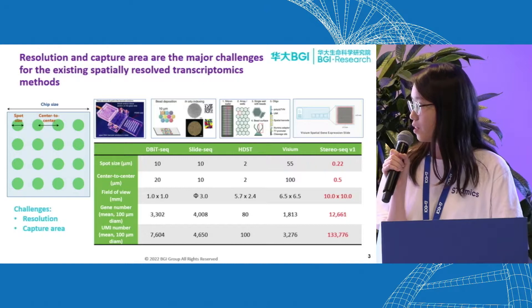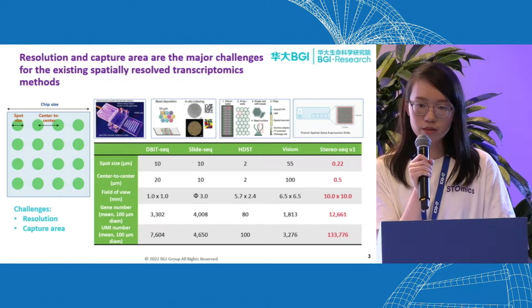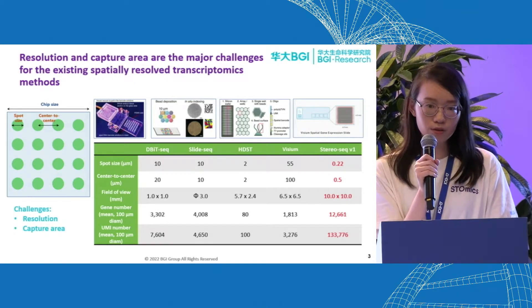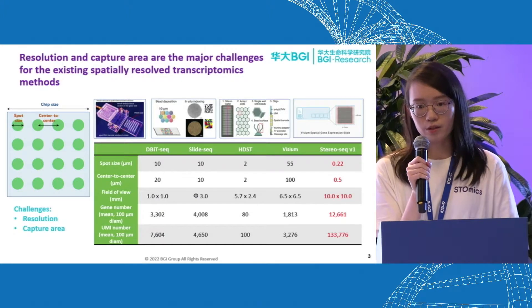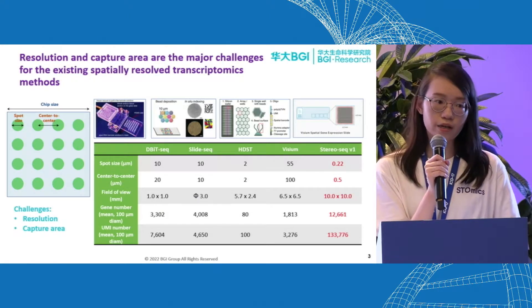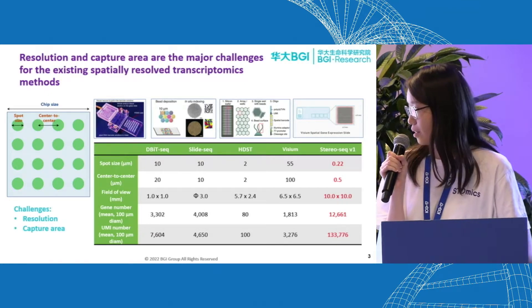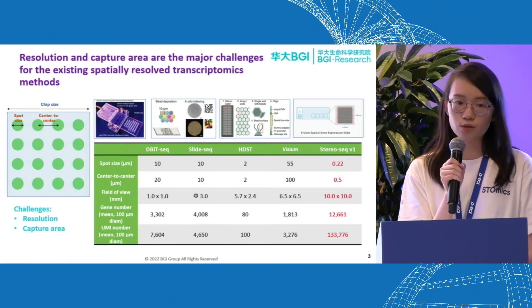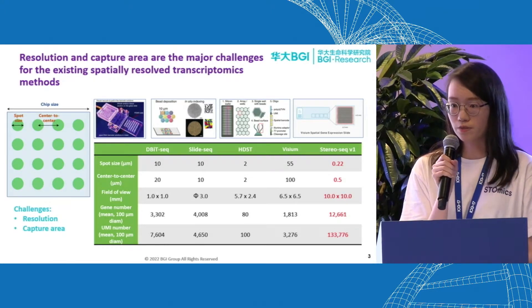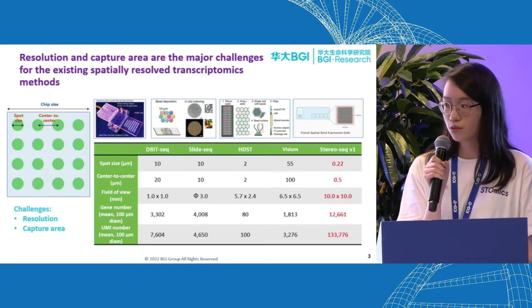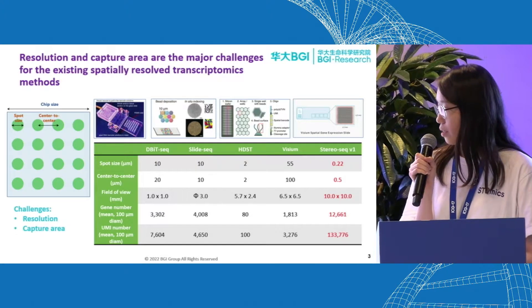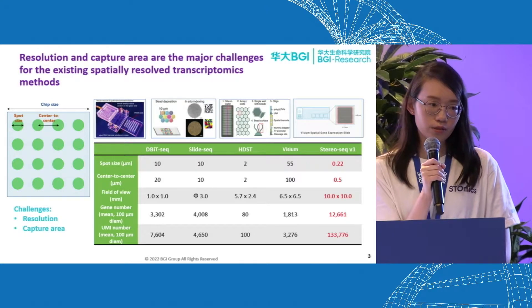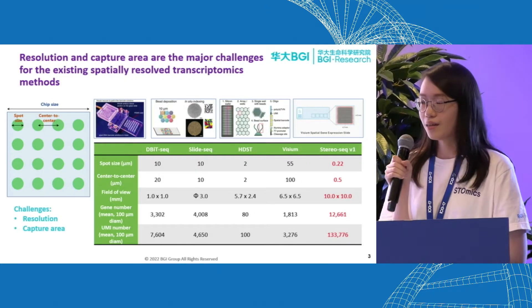BGI developed this spatially-resolved transcriptomic technique called StereoSeq. StereoSeq combines billions of tightly packed barcodes with a large capture area, high reproducibility, and also high capture rate. The spot size for StereoSeq V1 is about 220 nanometers with a 500 nanometer center-to-center distance, achieving nanoscale resolution. For the field of view, we have a one-by-one centimeter chip size as the current standard.